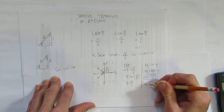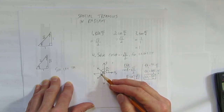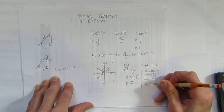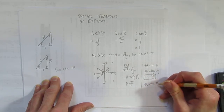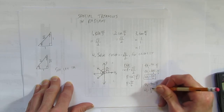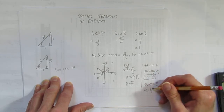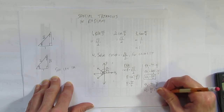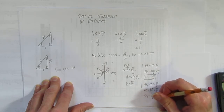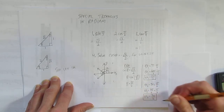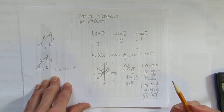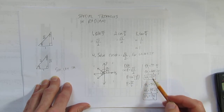For theta 2 in quadrant 3, the formula is always pi plus the related acute angle. So theta 2 equals pi plus pi over 6. With a common denominator of 6, that's 6 pi over 6 plus pi over 6, giving theta 2 equals 7 pi over 6. So we've solved using special triangles by sketching the rotation, finding the related acute angle, and solving both possible rotations.